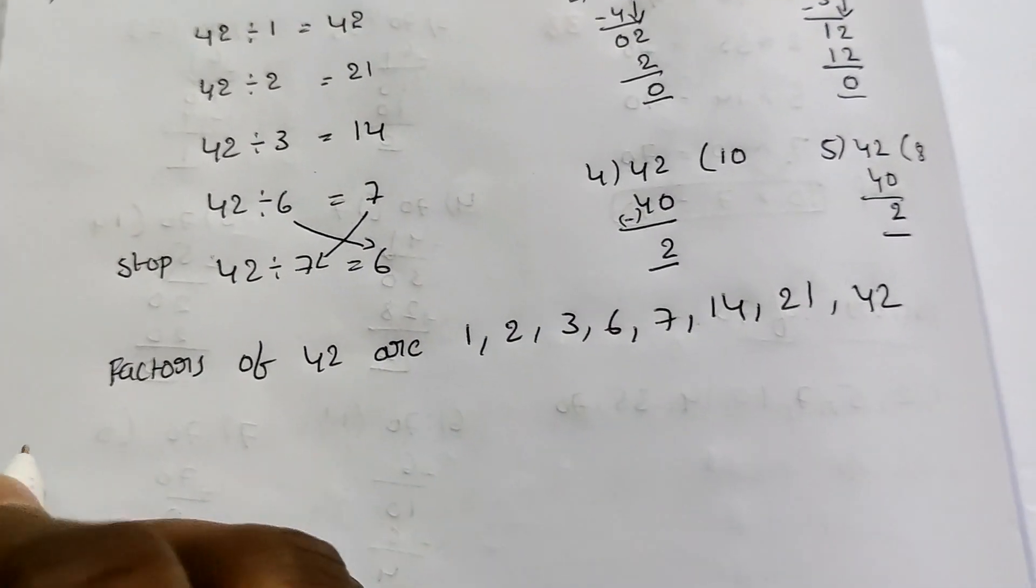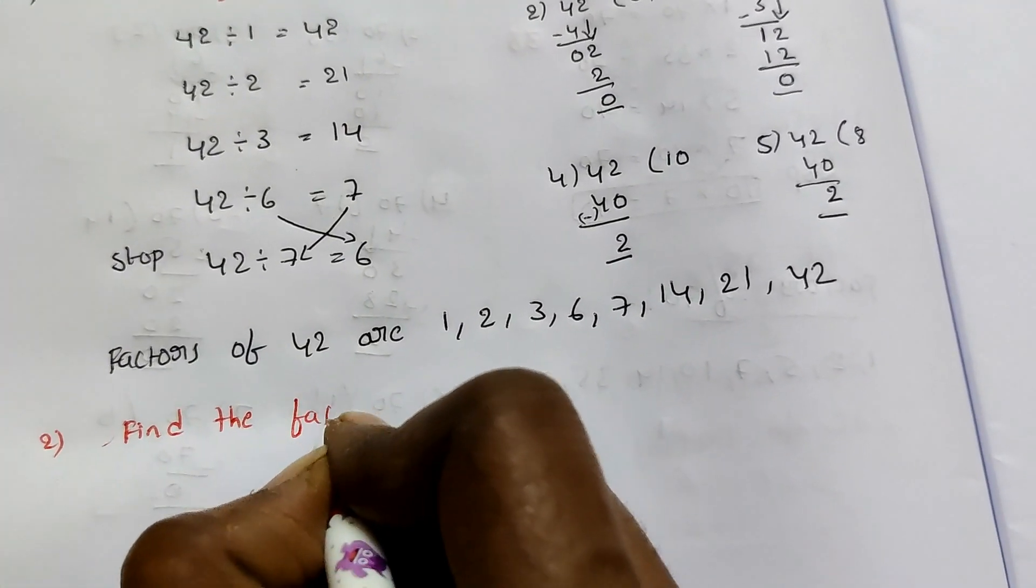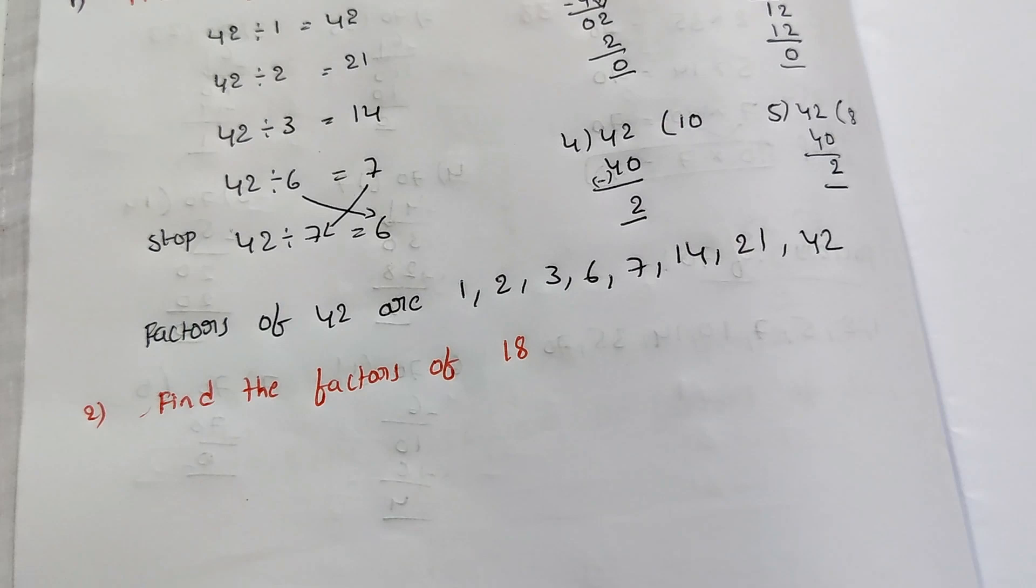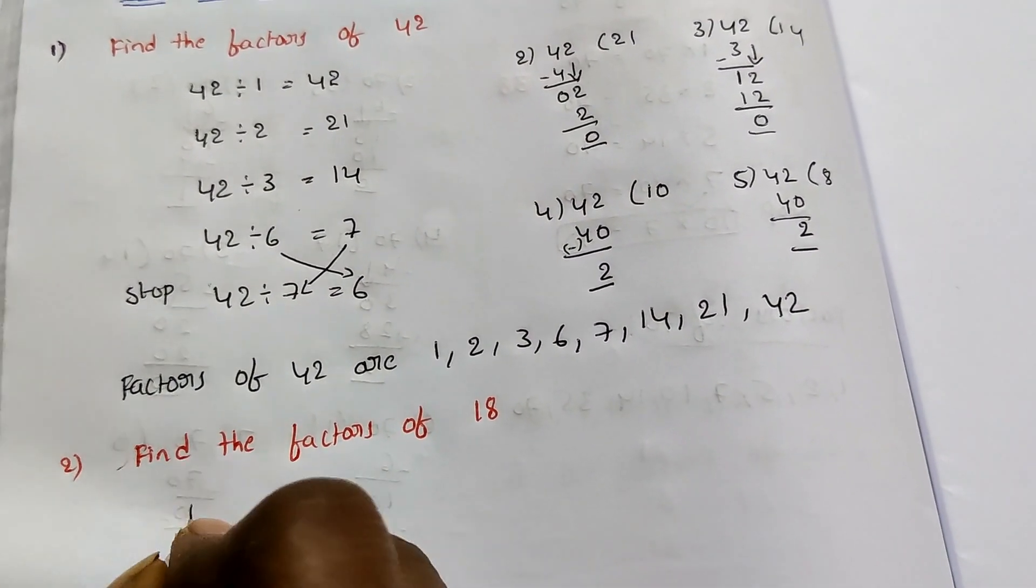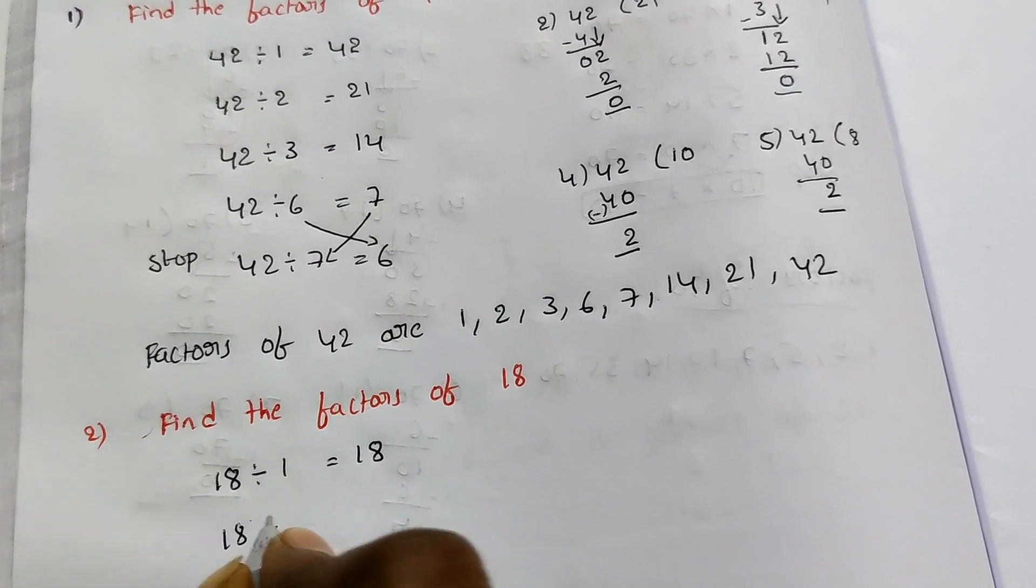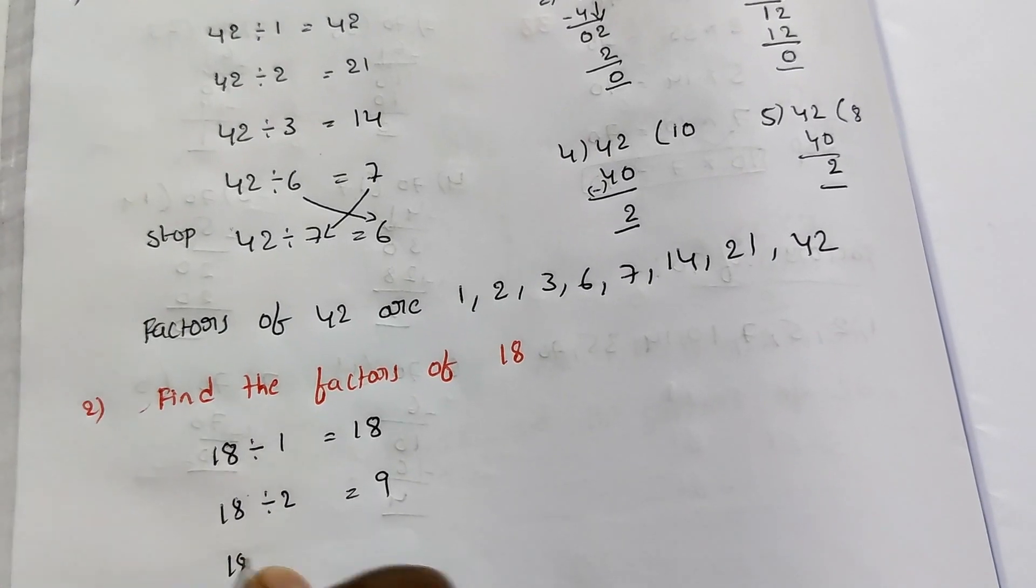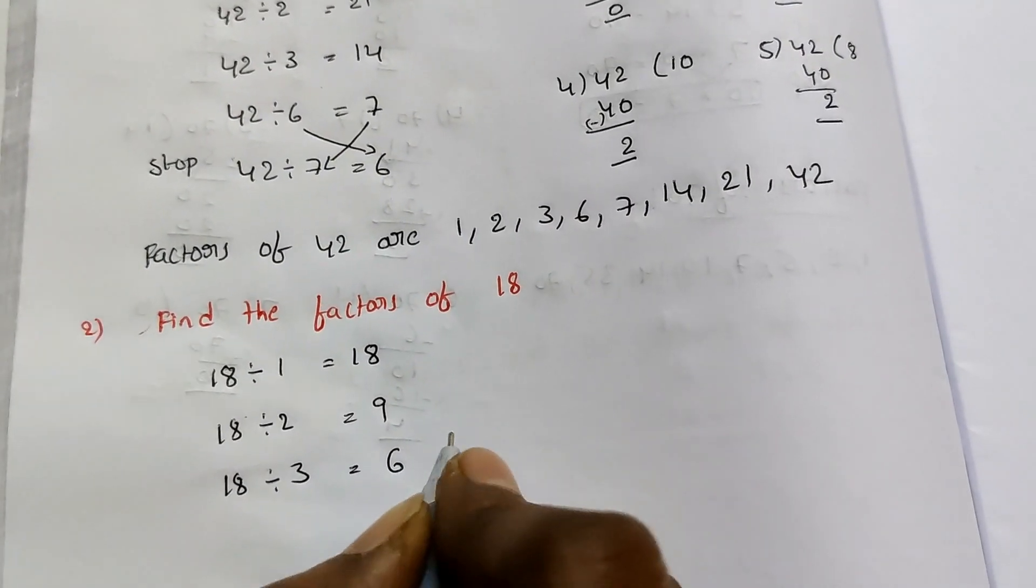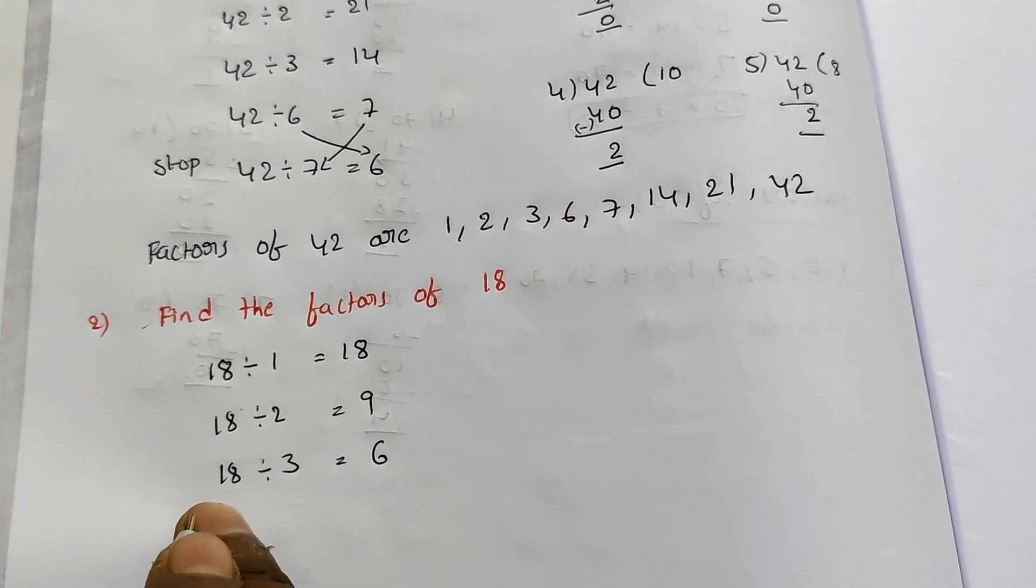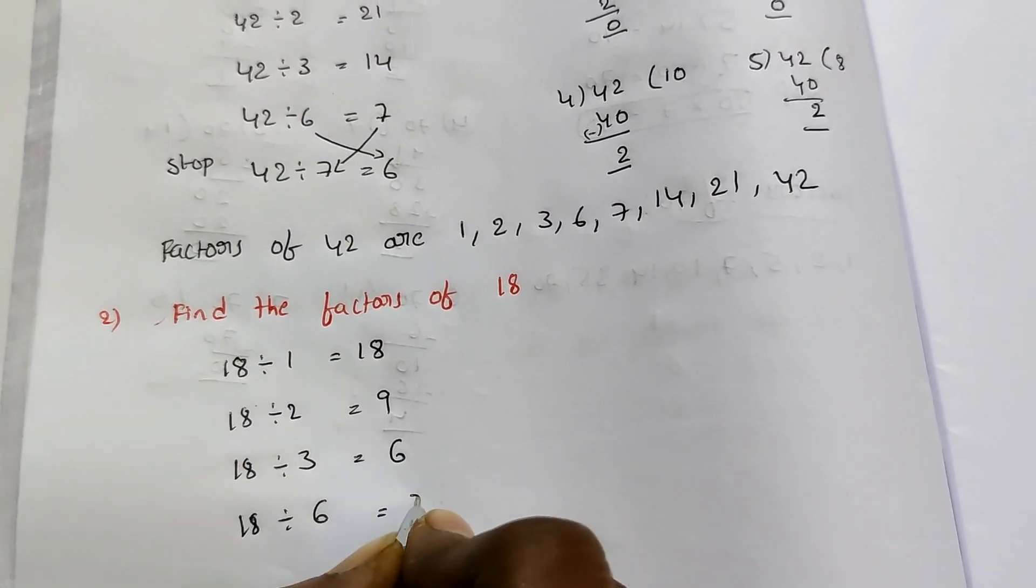So next example, now find the factors of 18. So first, 1 divides 18, quotient is 18. Next, 2 table: 18 divided by 2 equals 9. Next, 3: 18 divided by 3 equals 6, remainder 0. Next, 4 table and 5 table don't divide evenly.